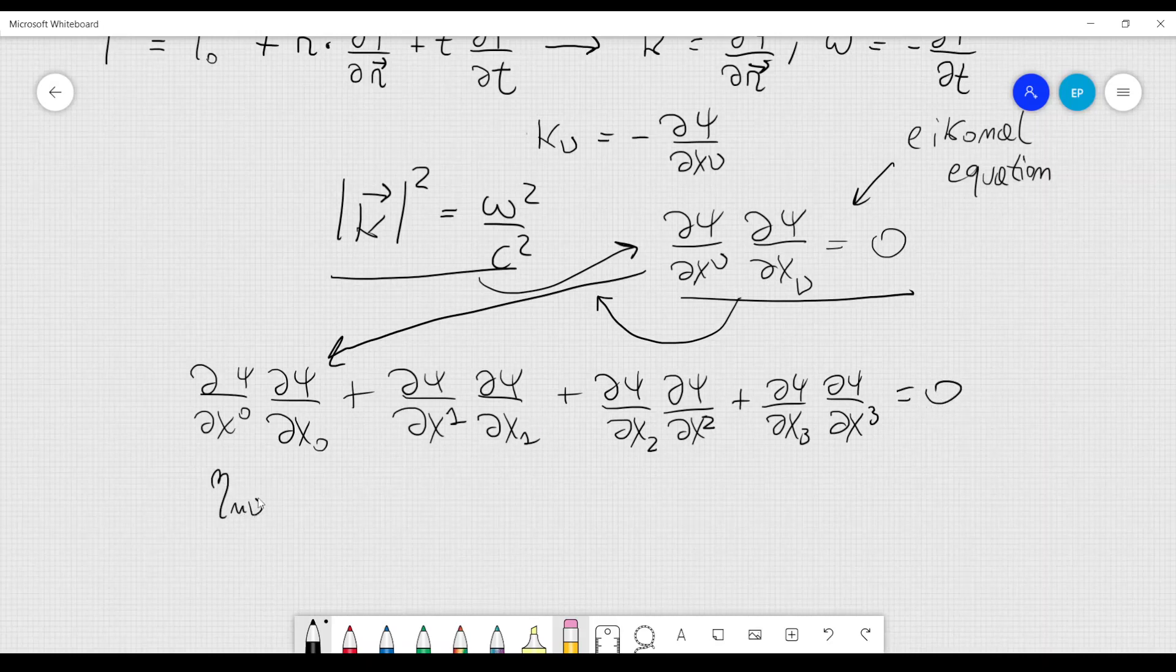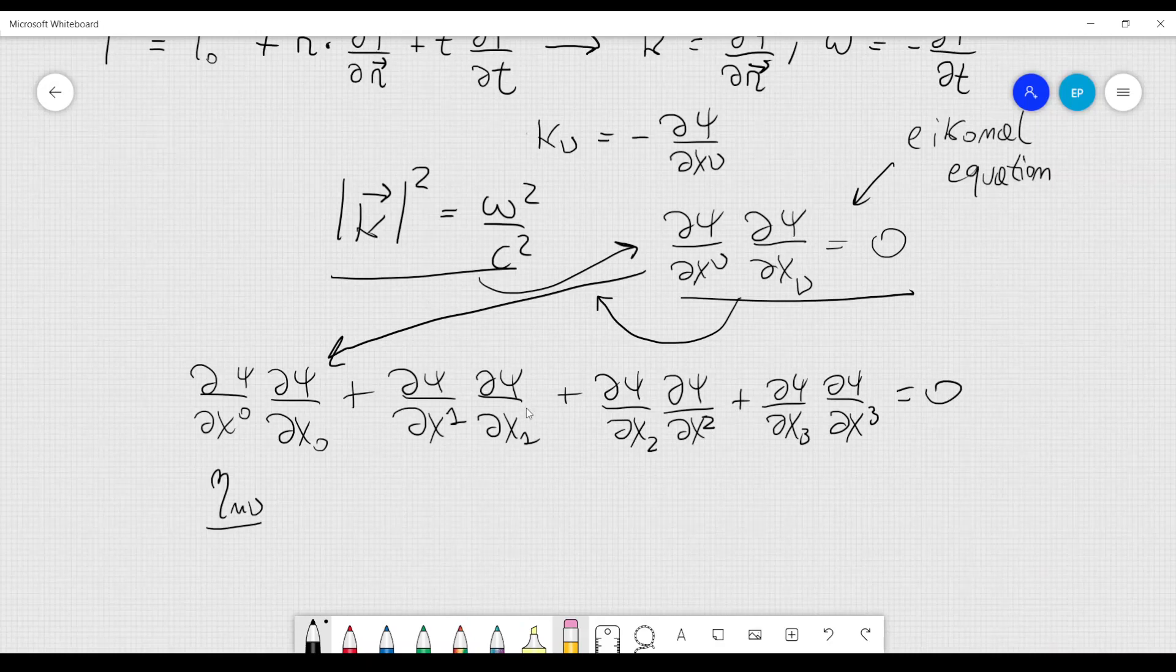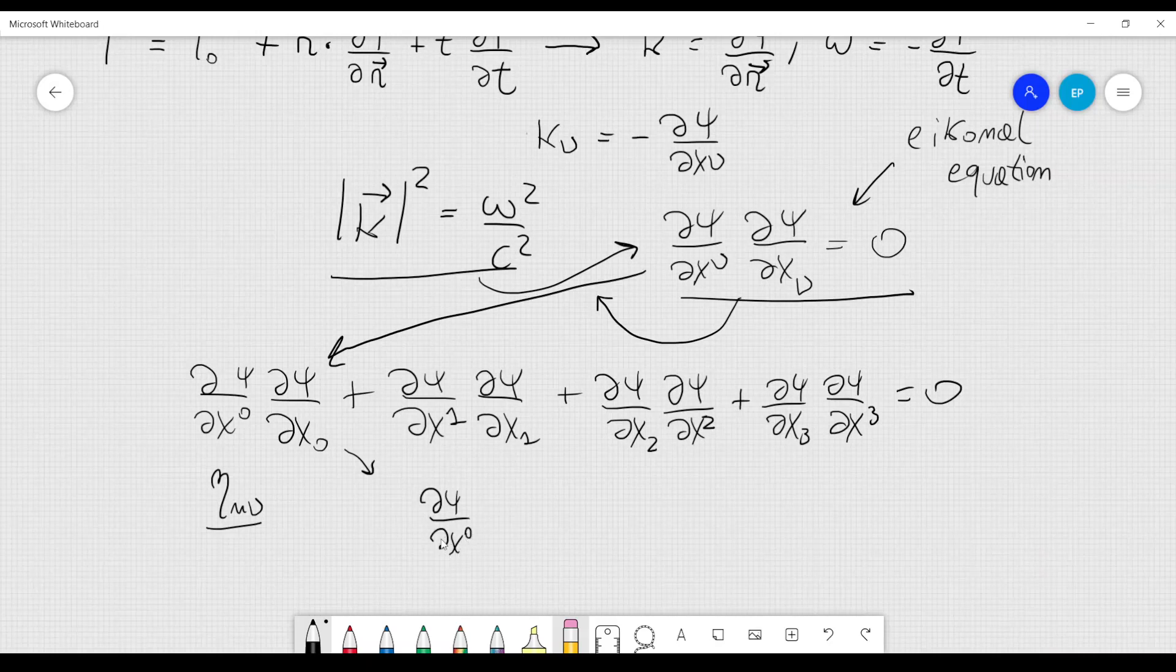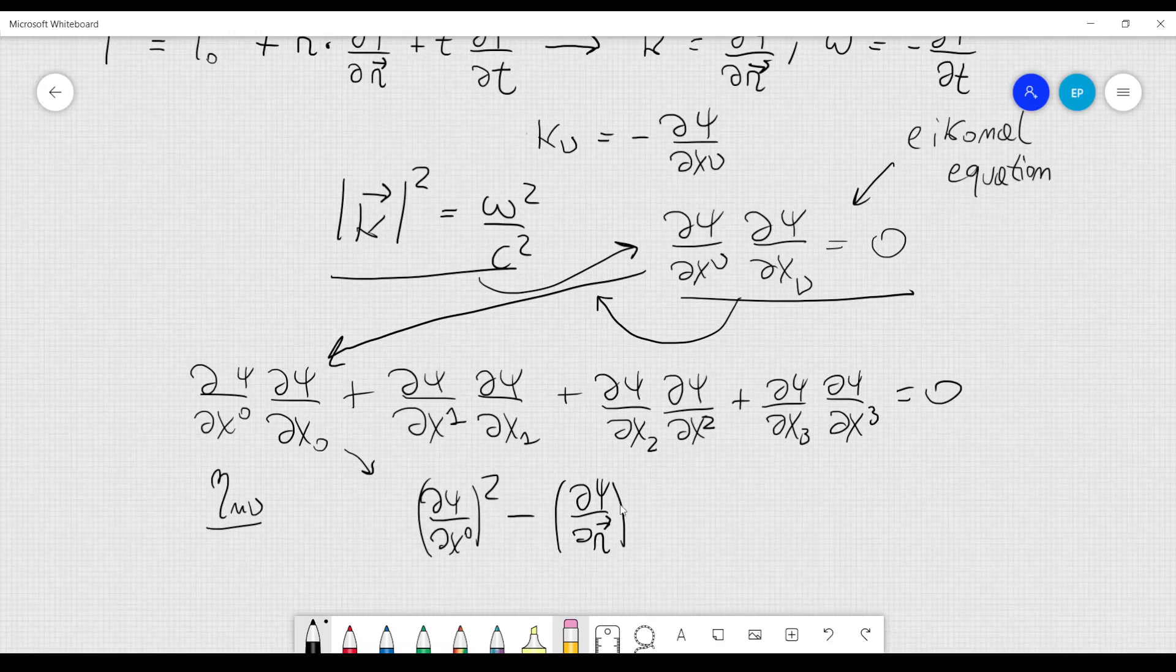And if we use the metric tensor, eta mu nu, which is the Lorentz metric tensor, we can lower or raise indices very easily. The spatial indices will change sign, whereas the time index will remain with the same sign. So in here, I can also write this as d psi over dx 0, squared minus the gradient d psi over dr, squared, equal to 0.